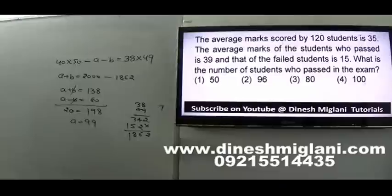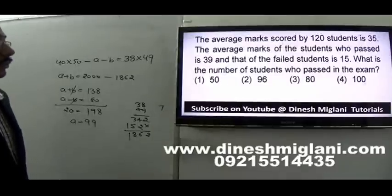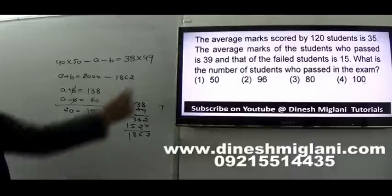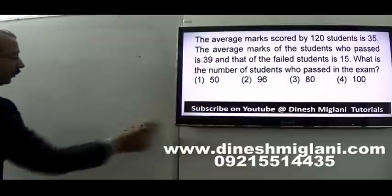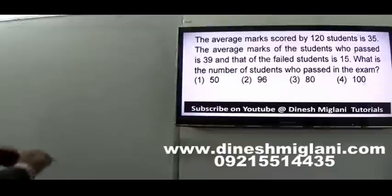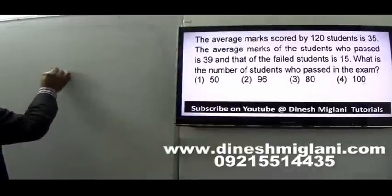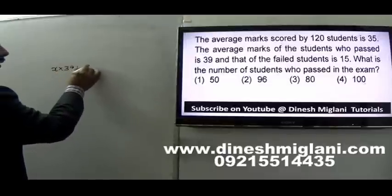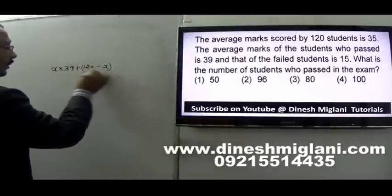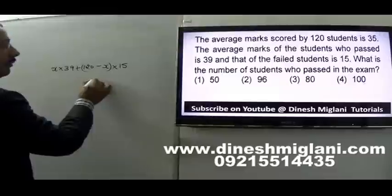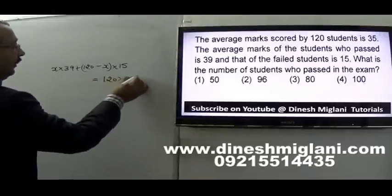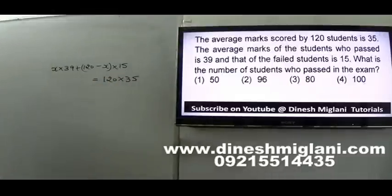Question 18: Average marks scored by 120 students is 35. Average marks of students who passed is 39, and of those who failed is 15. Find the number who passed. Let students who passed be X, so failed is 120 minus X. Then: 39X plus 15(120 minus X) equals 120 into 35. Solving this equation gives the number of students who passed. This type of question can also be solved using allegation and mixture.